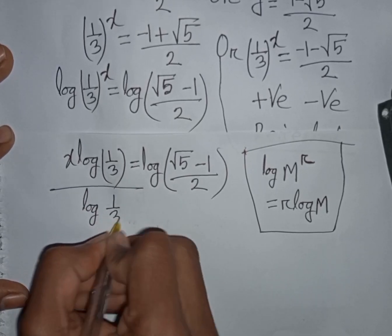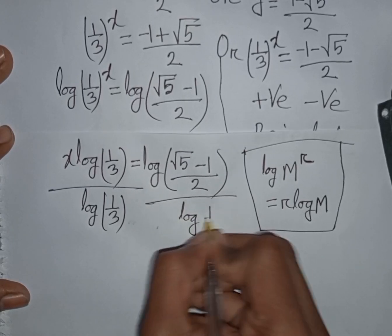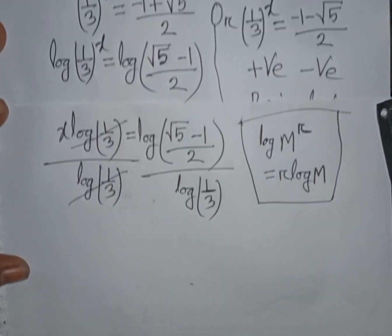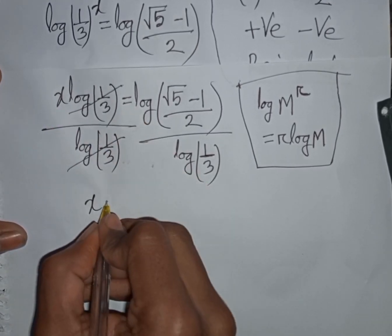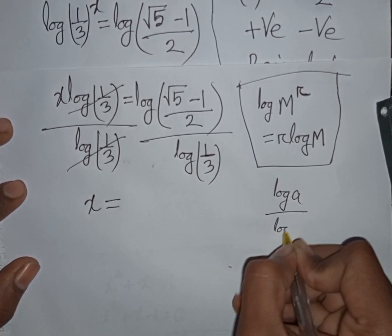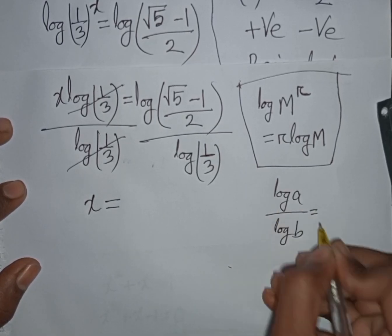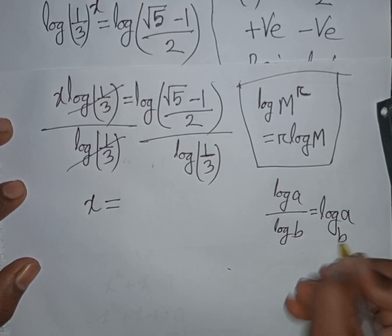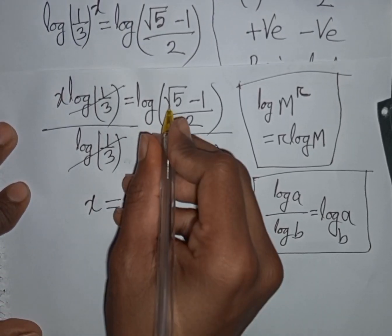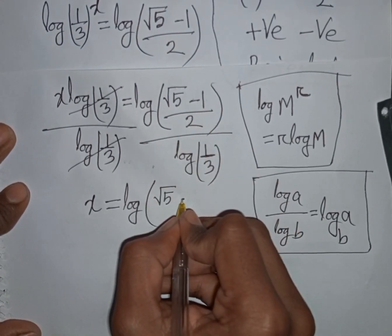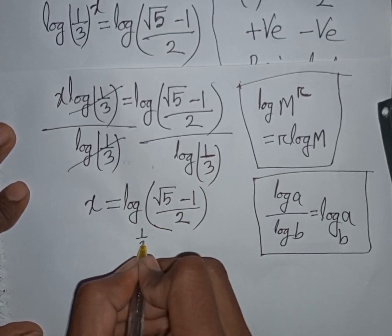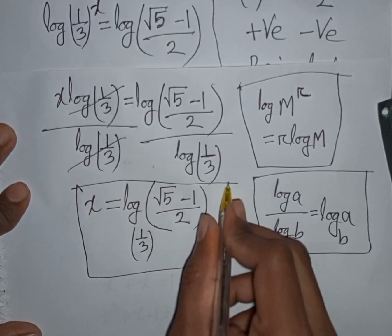Dividing by log(1/3) cancels it on the left. Using the formula log(a)/log(b) = log_b(a), we get x = log_{1/3}((√5 − 1) / 2). This is the value of x for the first problem.